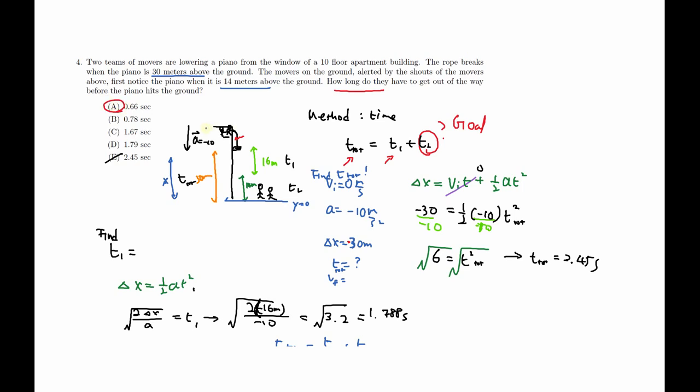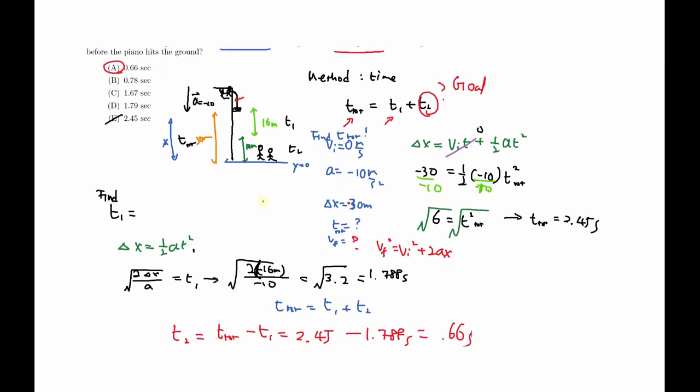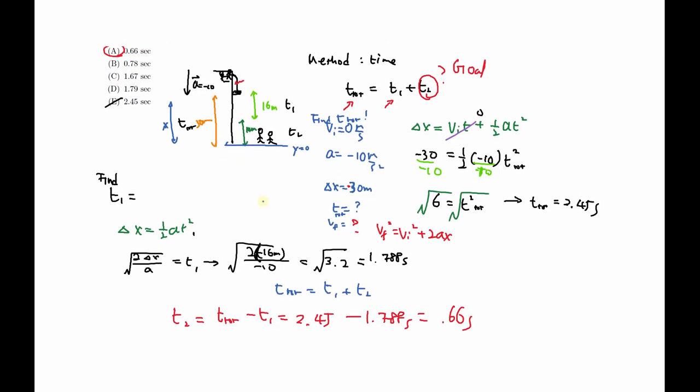The other method, you can find the final velocity. Remember, we did not know this at all. You could use the vf squared equals vi squared plus 2ax to find the final velocity for the 16 meter frame. However, that's right, that's going to be initial from the 14 meters above. So what you found as final velocity becomes initial velocity. Then you just have to use a kinematic equation to find the time that it takes for the piano to hit the ground. So that's another way. But you have quadratic equation if you do that, so it's not very friendly.